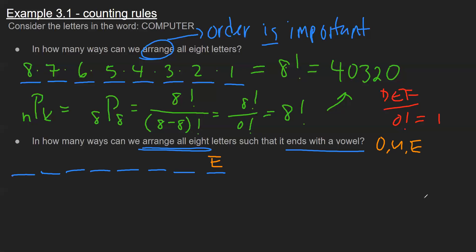So if I want the word to end with E, well, now I only have seven letters, and six and five and so on. And that's because the E is already being used. And if I follow this logic, I can do the same thing. But now the word could also end in the letter U.